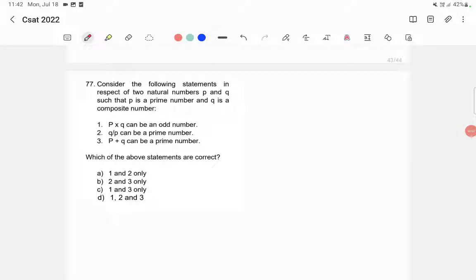Consider the following statements in respect to two natural numbers P and Q, such that P is a prime number and Q is a composite number. What is a prime number? A prime number is a number who has only one and the number itself as its factors, and a composite number is all the other numbers. The statements given here are that P into Q can be an odd number, Q by P can be a prime number, P plus Q can be a prime number.